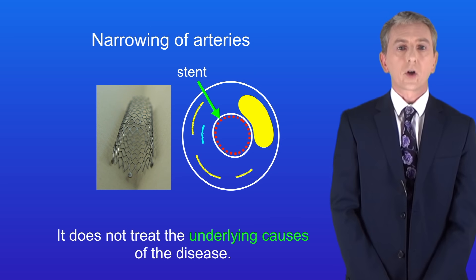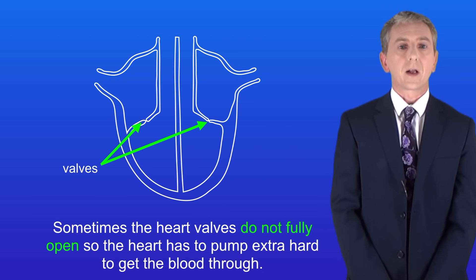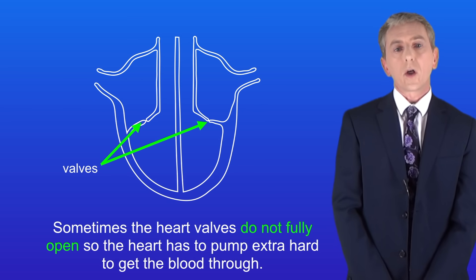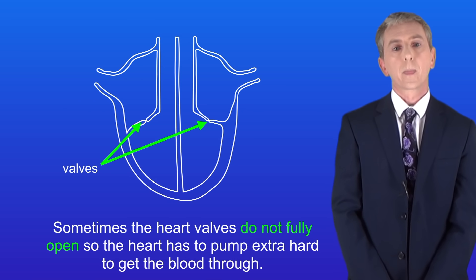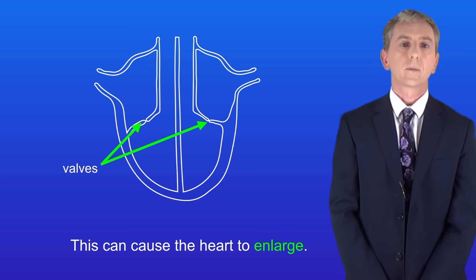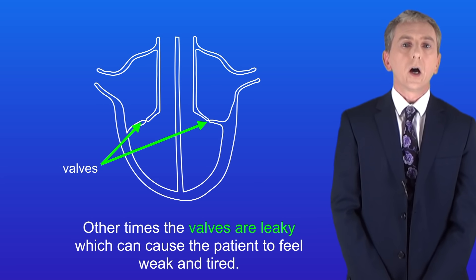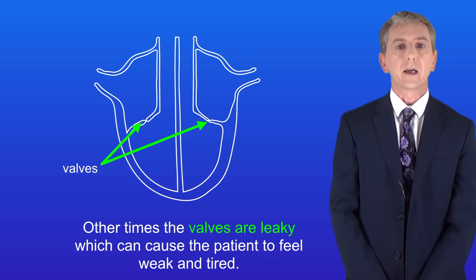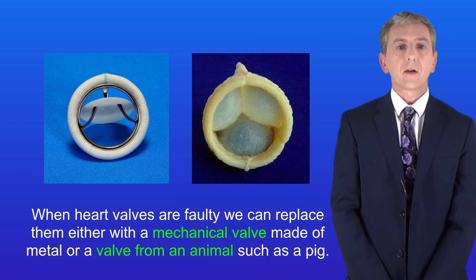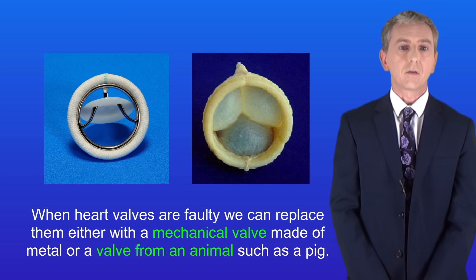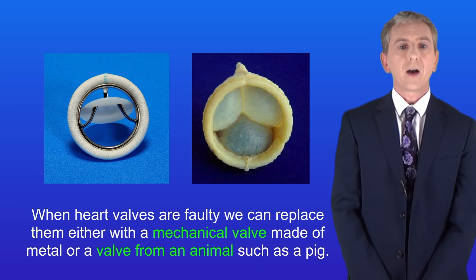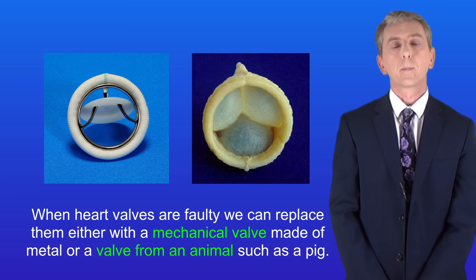Another type of cardiovascular disease concerns the heart valves. Sometimes these valves do not fully open, so the heart has to pump extra hard to get the blood through, which can cause the heart to enlarge. Other times the valves are leaky, which can cause the patient to feel weak and tired. When heart valves are faulty, we can replace them either with a mechanical valve made of metal or a valve from an animal such as a pig.